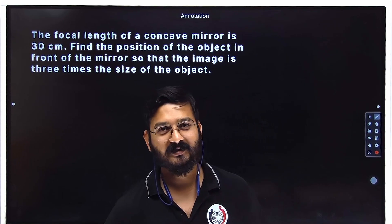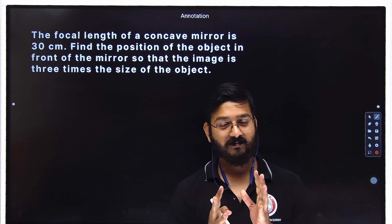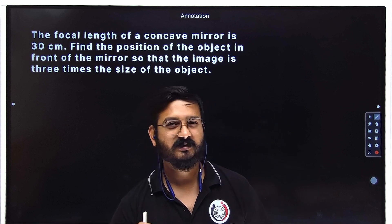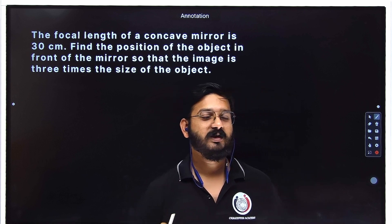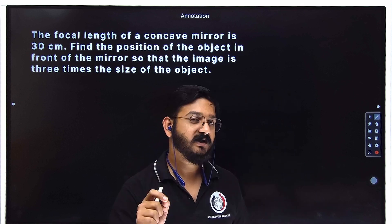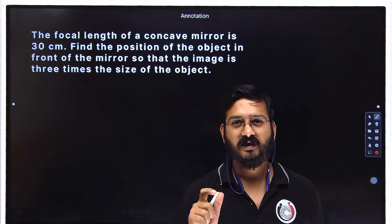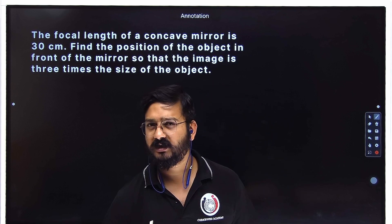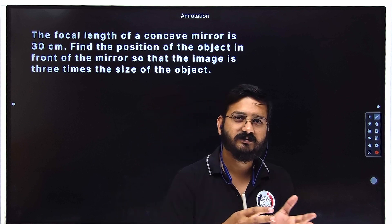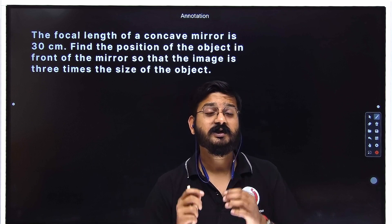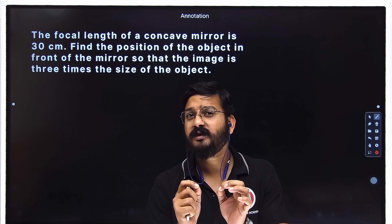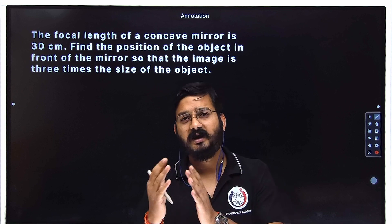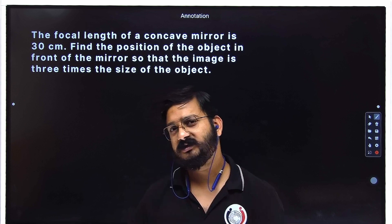Dear students, I welcome you all to Chakru Academy. I hope all of you are doing well and completely focused on your board exam preparation. In today's session, I'm going to discuss some very important numericals from the mirror formula and the lens formula, and I will tell you how to identify when the focal length is positive or negative, because there's a very common mistake in these kinds of numericals — sometimes you take plus, sometimes minus without noticing the reason. Let's start the session.